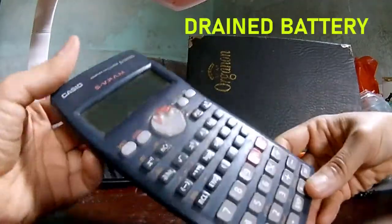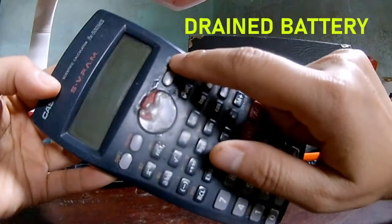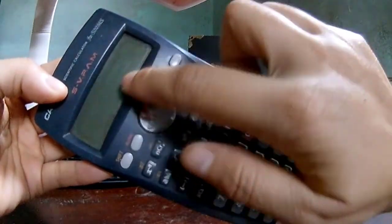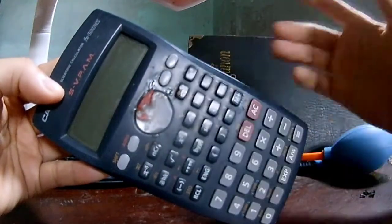1. Your Casio calculator is working fine, but one day you can't turn it on. Perhaps the battery has totally drained its energy.